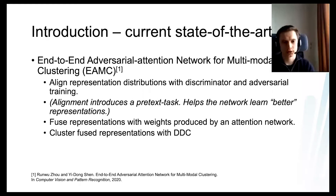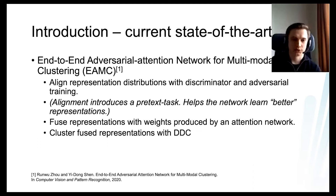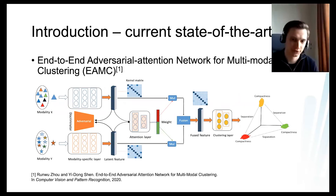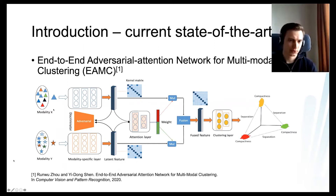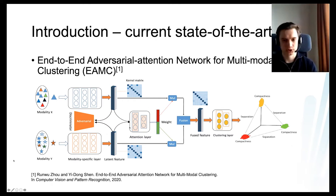EAMC also fuses the aligned representations using weights produced by a small attention network that operates in the representation space and outputs weights for a linear combination to produce the fused representation. This is then clustered with the Deep Divergence-based Clustering module. The model has two modality encoders, an adversarial alignment module, an attention network for fusion weights, and a clustering module.